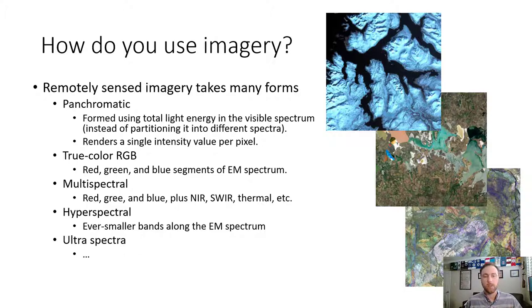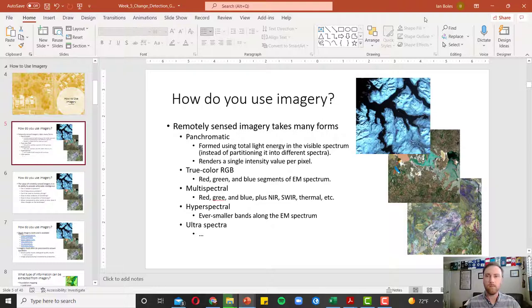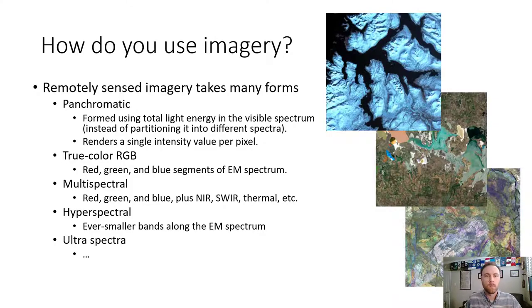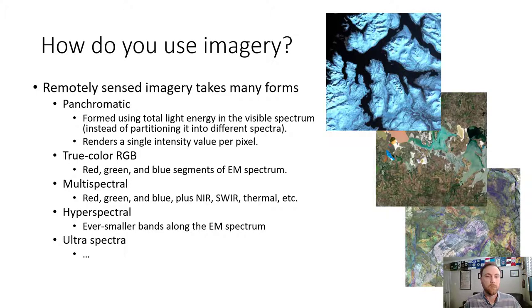True color RGB is multi-spectral but with just the red, green, and blue bands occupying those channels on a monitor. Multi-spectral is RGB plus at least one other band — maybe near-infrared, shortwave infrared, or thermal. It's RGB plus bands of the electromagnetic spectrum not visible to the human eye. Hyperspectral uses ever-smaller bands along the electromagnetic spectrum, with the bands becoming essentially continuous. Ultra-spectral involves thousands of tiny slivers of light along the spectrum, allowing greater detail but taking in much less light on a per-band basis.